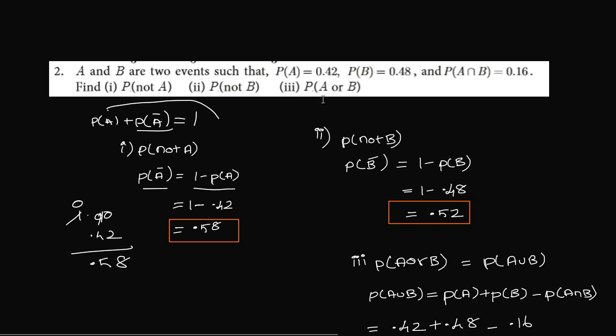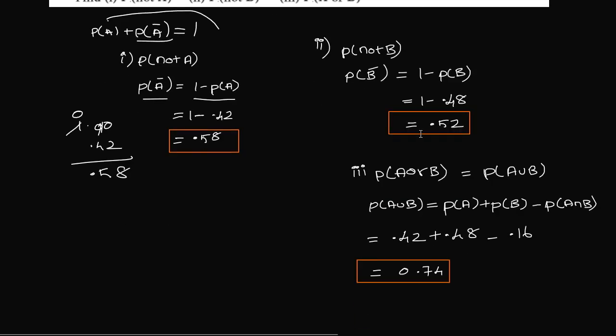Next, P(A or B). P(A or B) and A union. That is P(A union B). So P(A union B) formula: P(A) plus P(B) minus P(A intersection B).